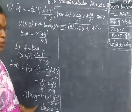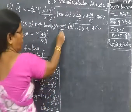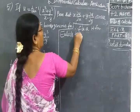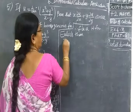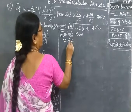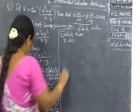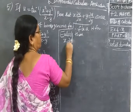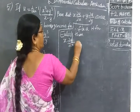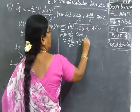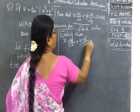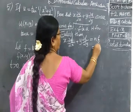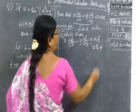If it is a homogeneous function, we can apply Euler's theorem. So by Euler's theorem, you can write X into partial F by partial X plus Y into partial F by partial Y equal to nf. n is 2, equal to 2F.